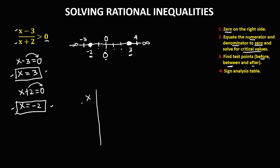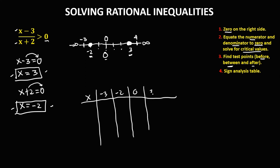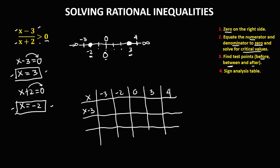Place these numbers in a sign analysis table. We have x with possible values: negative 3, negative 2, 0, positive 3, and positive 4. For the equation, the numerator is x minus 3, the critical value is positive 3, and the denominator is x plus 2.